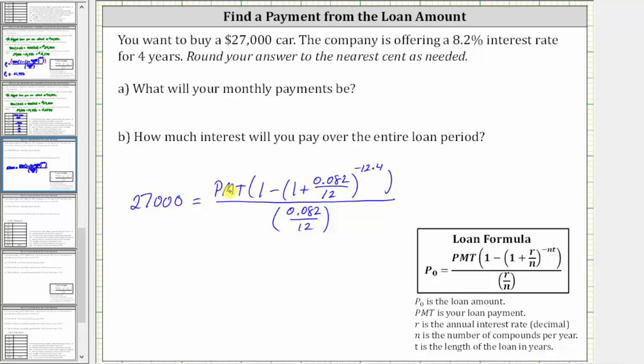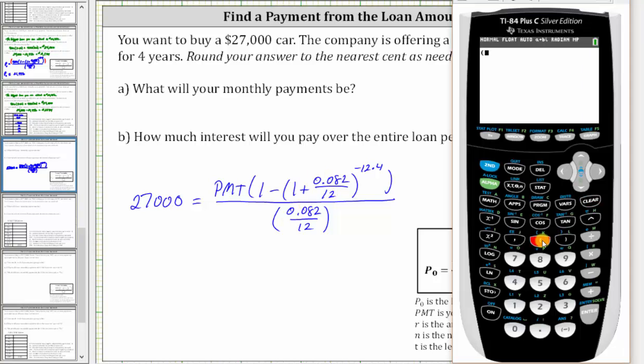Now to solve for PMT, we will first evaluate this quotient, which will leave us with PMT times some value, and then we can divide both sides of the equation by that value. So now we go to the calculator and determine this quotient. We enter open parenthesis, one minus, open parenthesis, one plus 0.082 divided by 12, close parenthesis. This is raised to the power of negative 12 times four, which is negative 48.